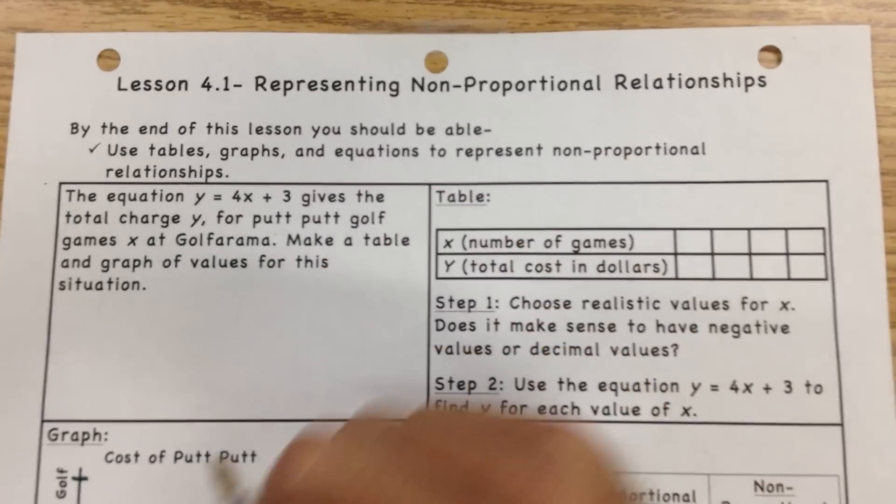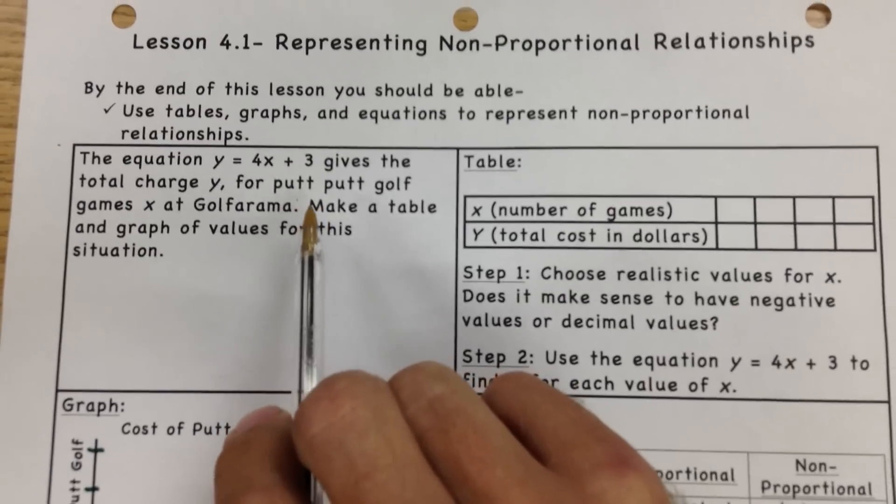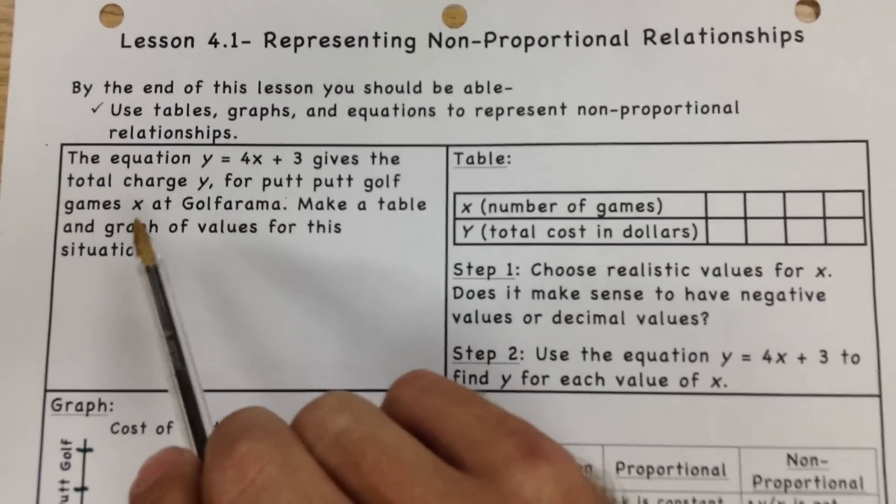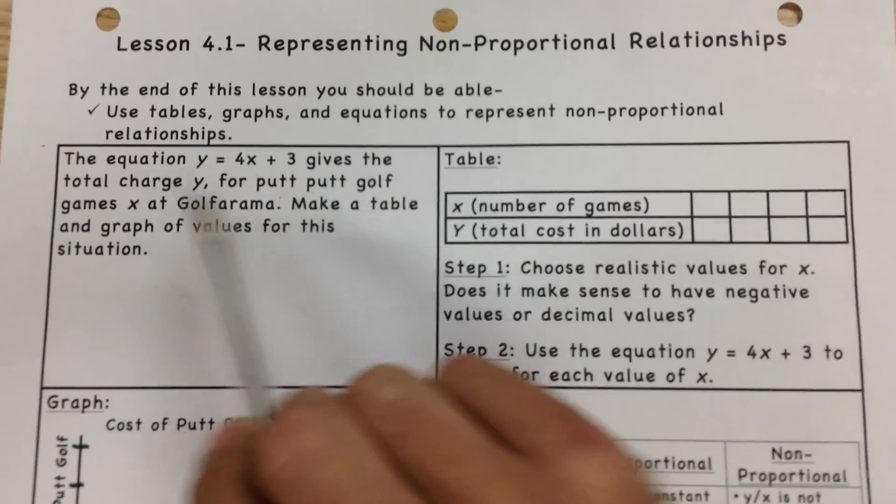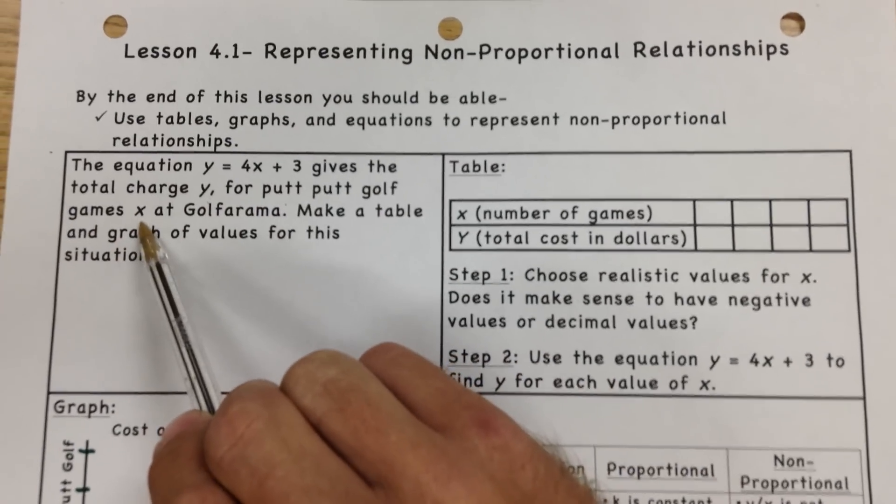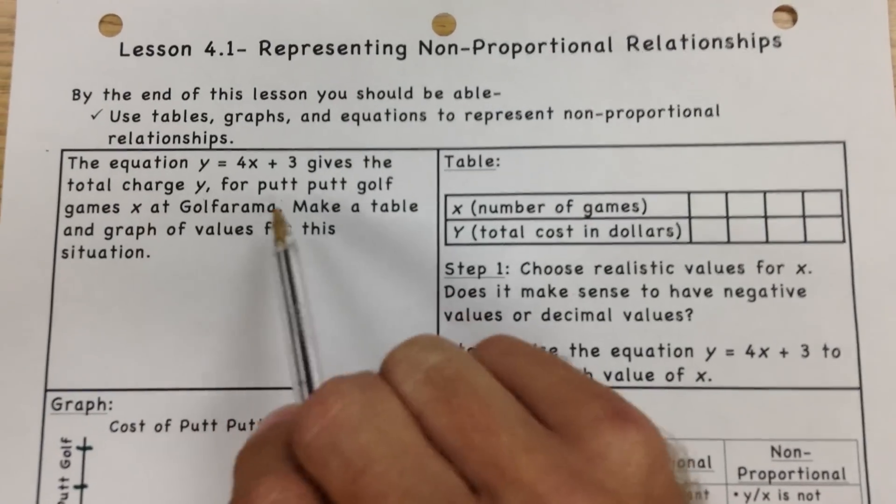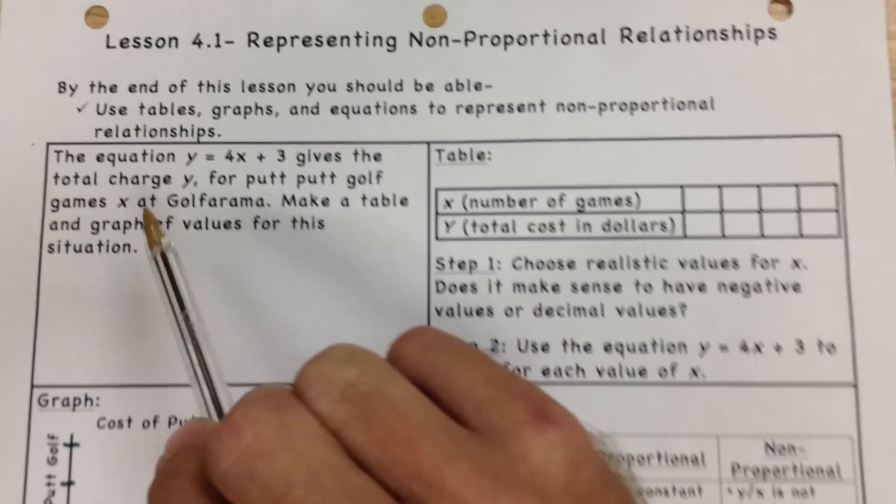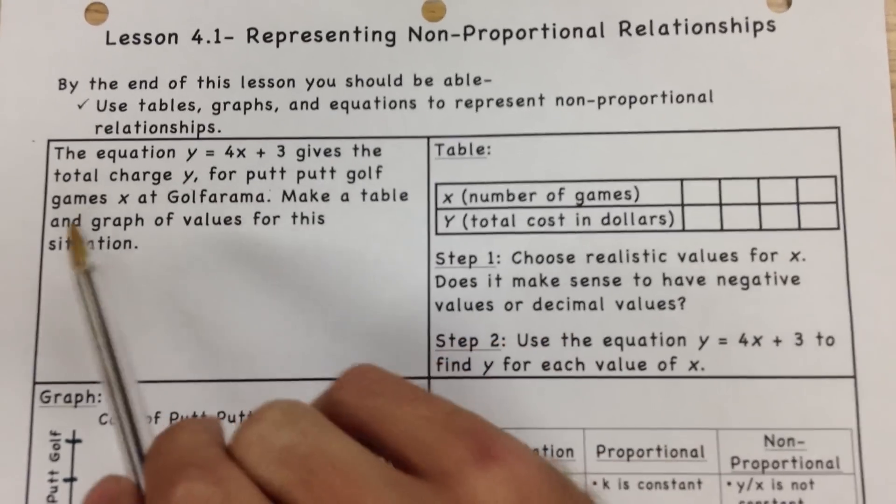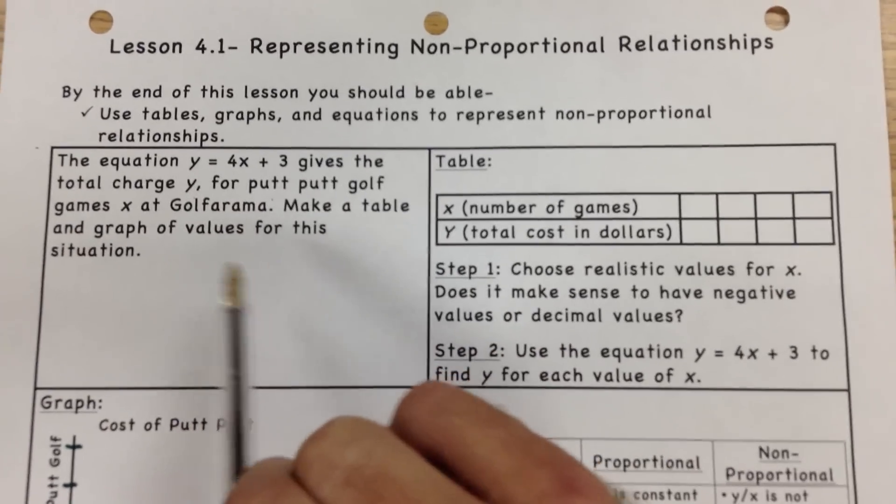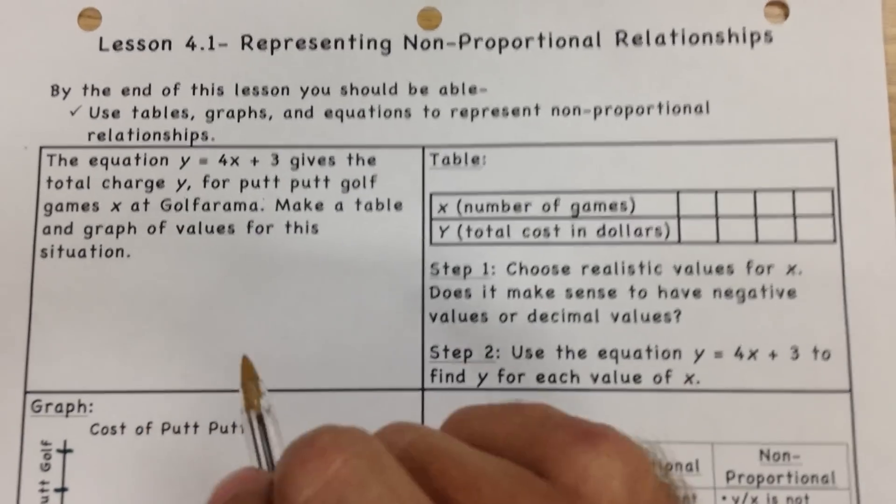First let's talk about the situation here. We have an equation, it says y equals 4x plus 3, and what this represents is the total charge, which is our answer for y, for putt-putt golf games, and that's the x, that's the number that will change. We're going to put different numbers in for x, and it's going to give us different answers depending on the number of games played and the change in the cost. We're going to make a table and graph those values for this situation.